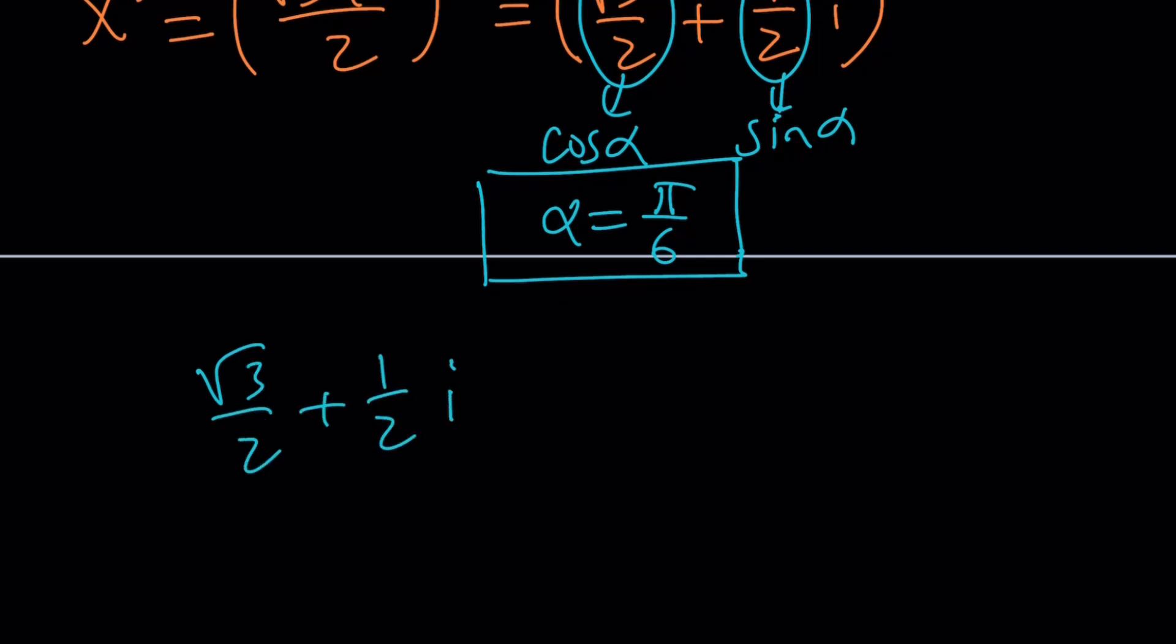So alpha is pi over 6, not because of cosine only, but sine also. That determines the quadrant. Alpha equals pi over 6, which means we can write our number, x or this number, root 3 over 2 plus 1 half i. Suppose x is a complex number.